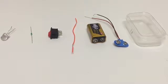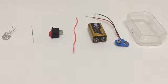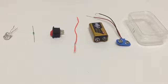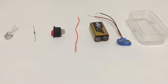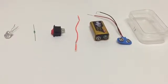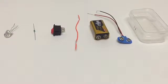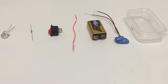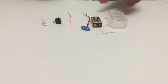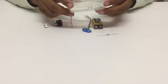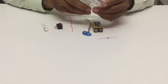Hi students, in this video you will be making your own torch. Materials required: LED, resistor, switch, wire, battery, battery connector, and a small plastic box. Take the box.